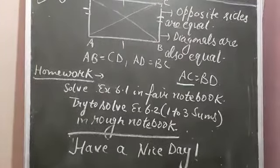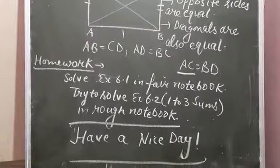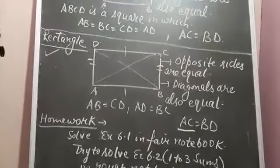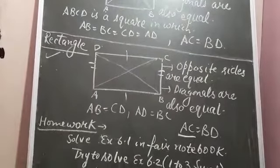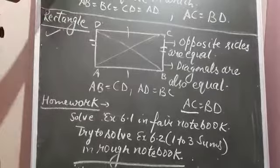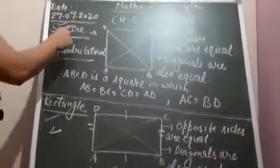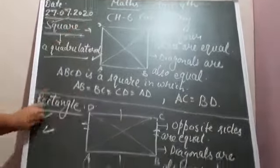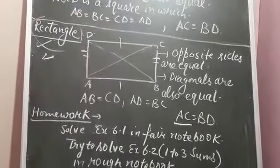So dear students, what I have discussed today: I have discussed what is a polygon — three sides is a triangle, quadrilateral has four sides, five sides is a pentagon, and six sides is a hexagon. After that I explained triangle, then quadrilateral, and I discussed two types of quadrilateral: square and rectangle. There are more quadrilaterals also, but those are not in your syllabus — only square and rectangle are there.